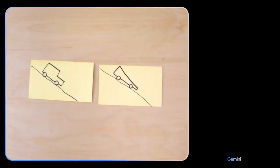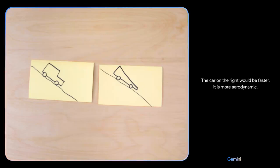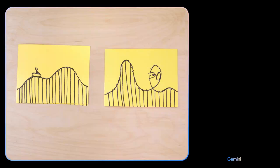Based on their design, which of these would go faster? The car on the right would be faster. It is more aerodynamic. Which looks more fun? The one on the right, because it has a loop.